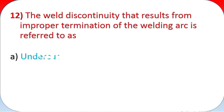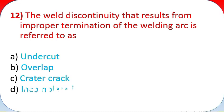Question 12: The weld discontinuity that results from improper termination of the welding arc is referred to as: A - undercut, B - overlap, C - crater crack, D - incomplete fusion, E - all of the above.